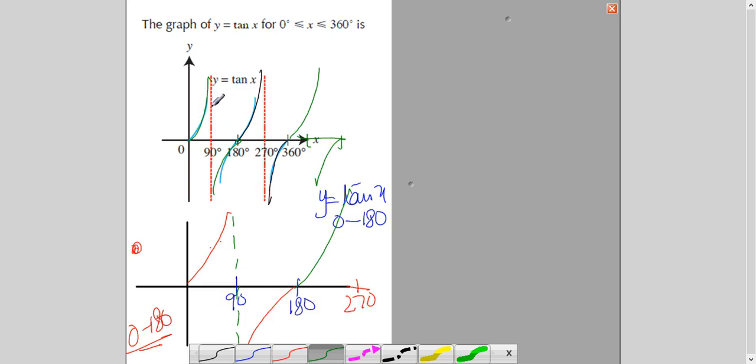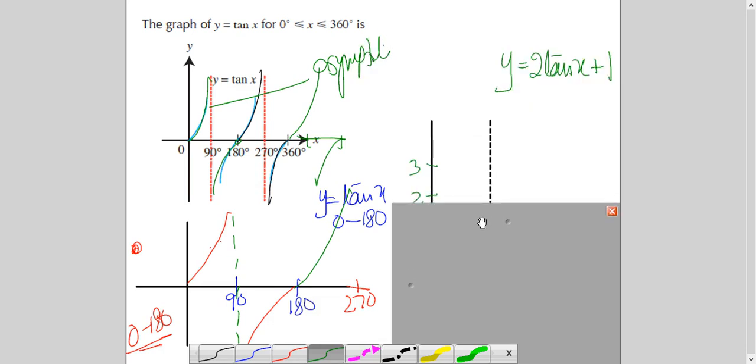And, the line towards which the curve is approaching but never touches is called asymptote.